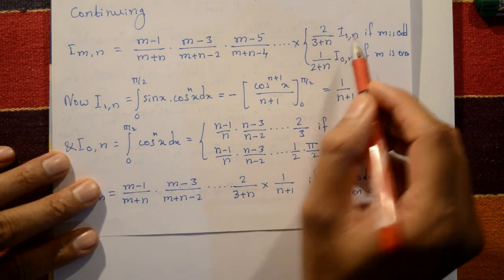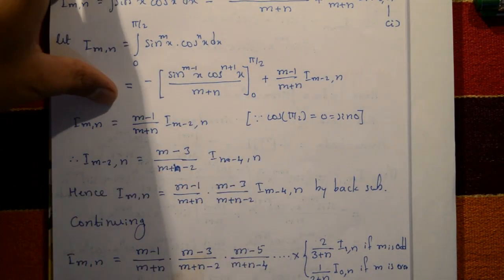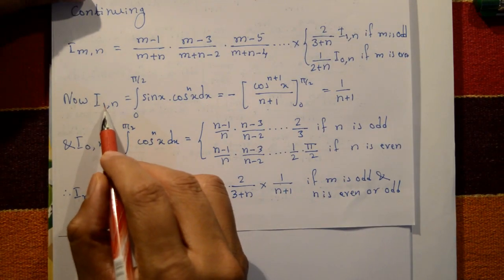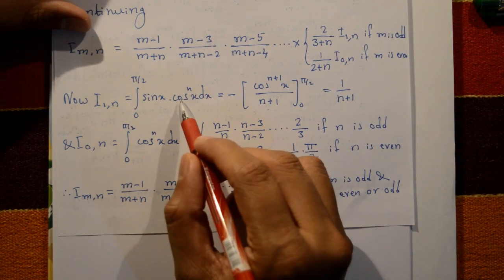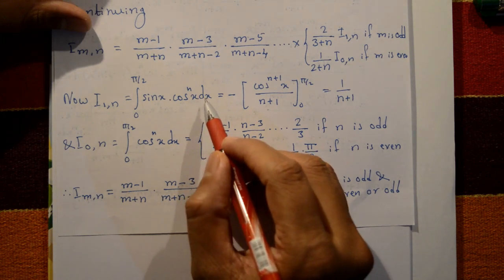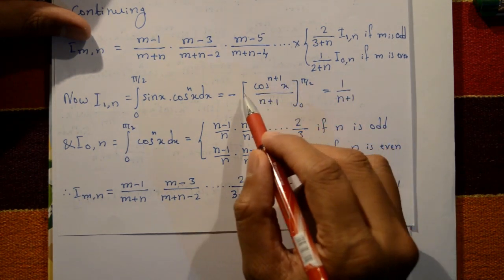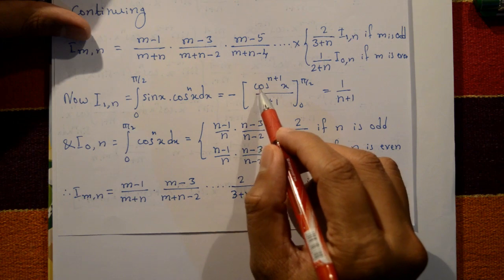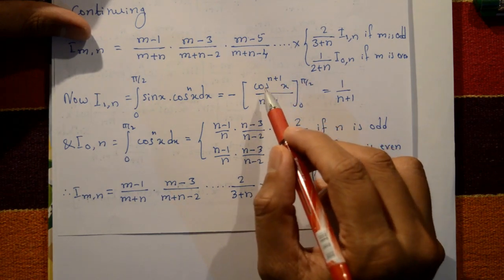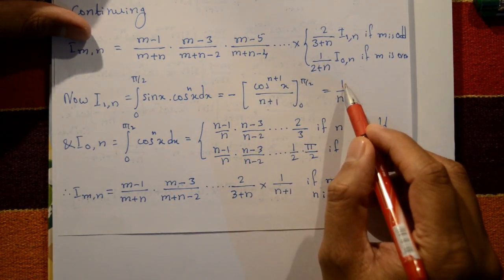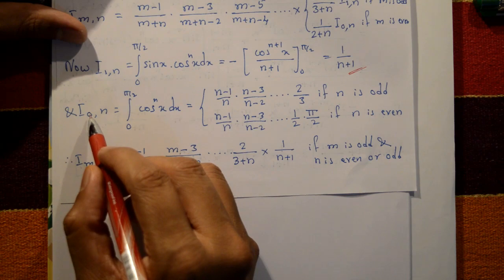For odd m, we compute I_(1,n): I_(1,n) = ∫₀^(π/2) sin(x)·cos^n(x) dx. Let cos x = t, so −sin(x) dx = dt. Then ∫t^n·(−dt) = −t^(n+1)/(n+1). Applying limits: cos(90°) = 0, cos(0°) = 1, gives −(0−1)/(n+1) = 1/(n+1). So I_(1,n) = 1/(n+1).